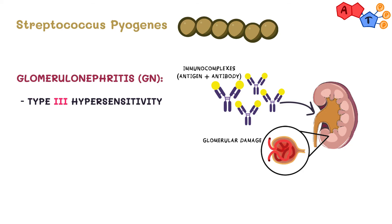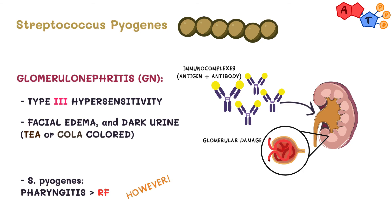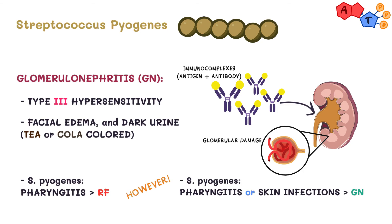Clinically, patients with glomerulonephritis will present with facial edema and darker urine — tea or cola colored — due to the presence of RBCs in the urine. It's important to note that rheumatic fever happens only after pharyngeal infection, whereas glomerulonephritis can happen after either skin or pharyngeal infections with Streptococcus pyogenes.